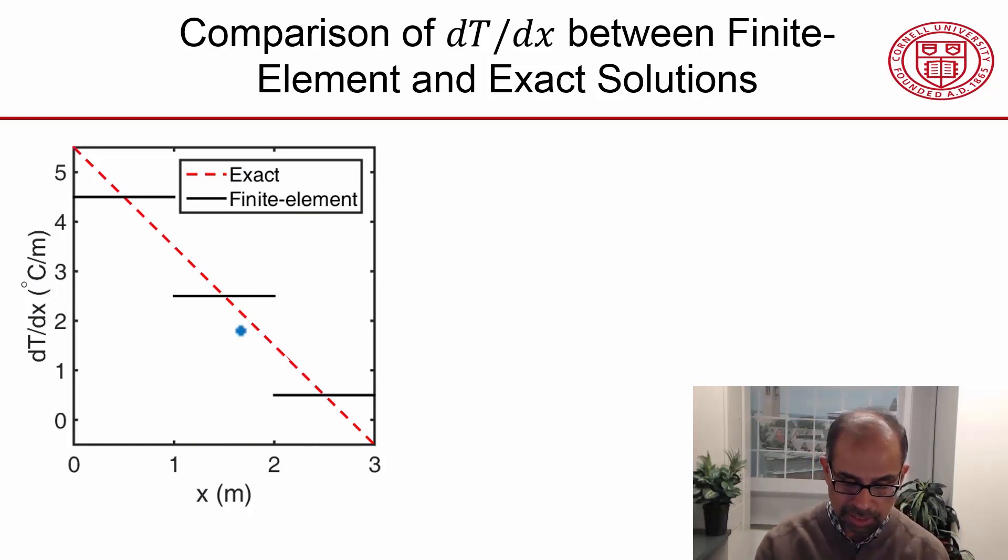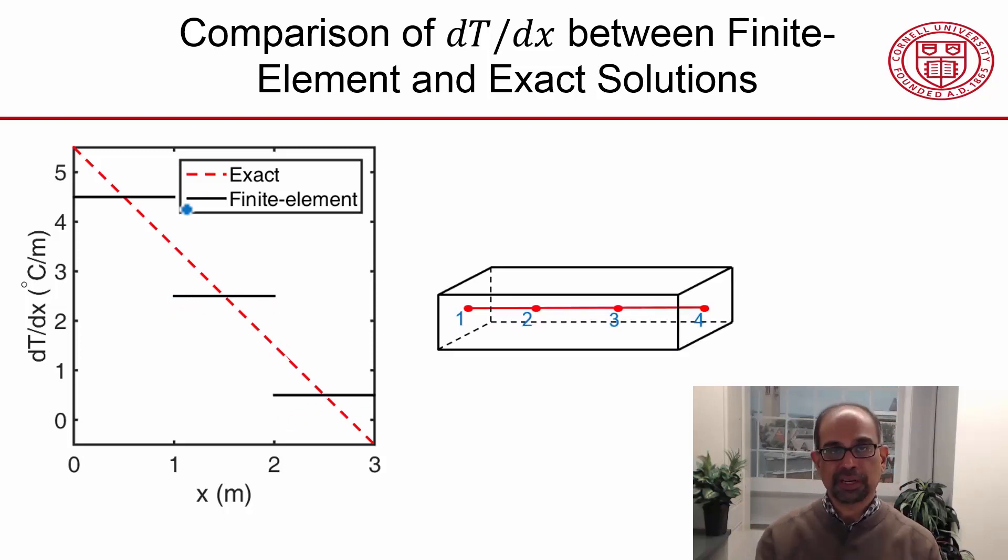So the exact solution is linear and decreasing, whereas the finite element solution is piecewise constant. And if I put up the graphic of the nodes sketched onto a figure of the bar, I see that over each element, the derivative is constant. And that's because we assume that there's a linear variation of the temperature over each element.